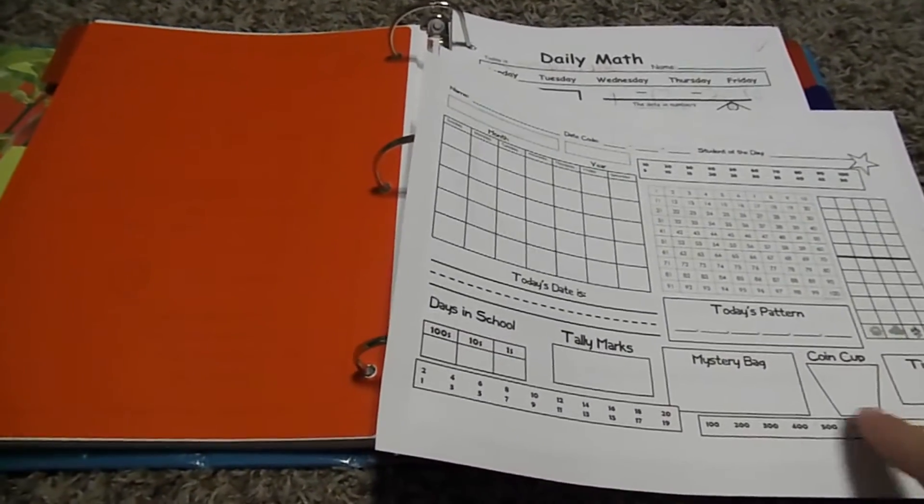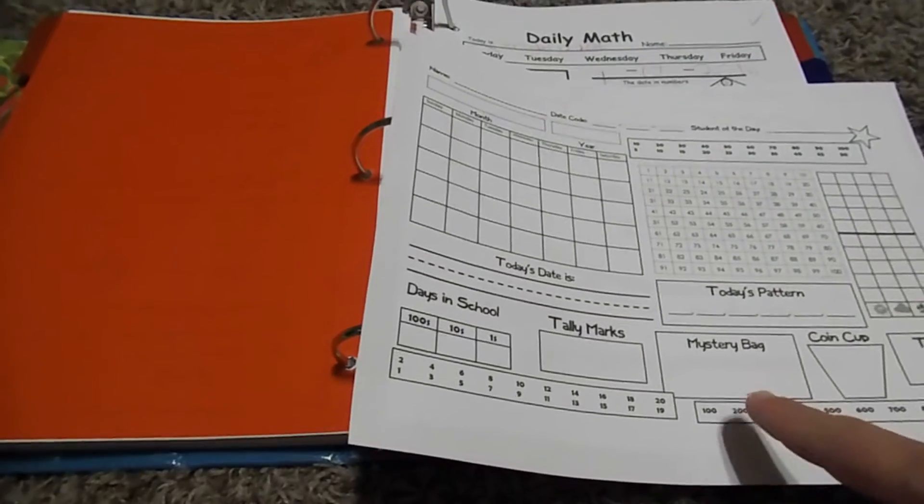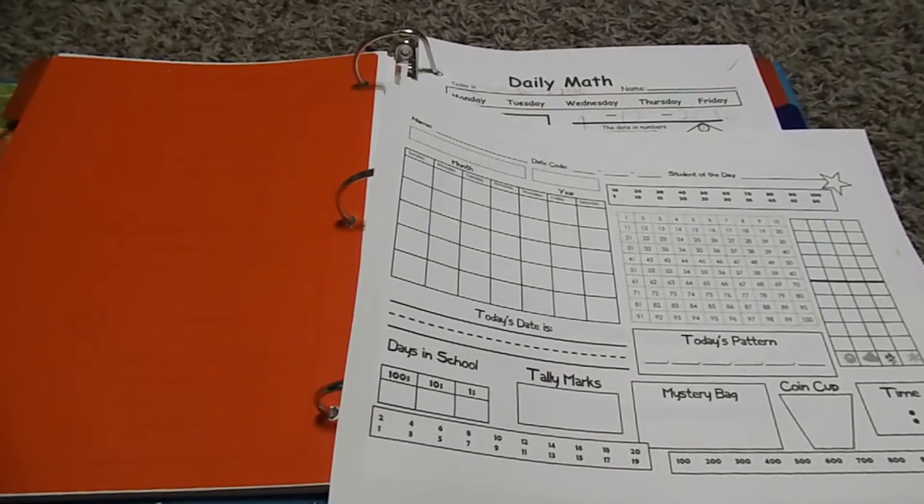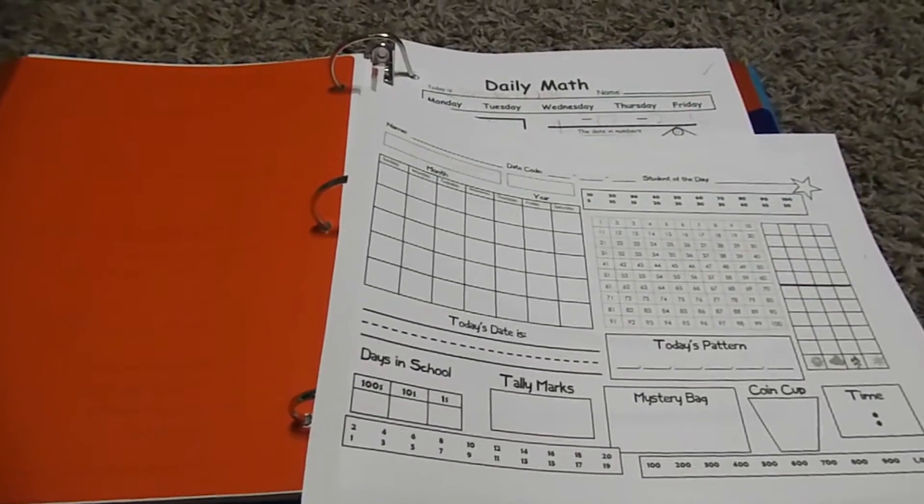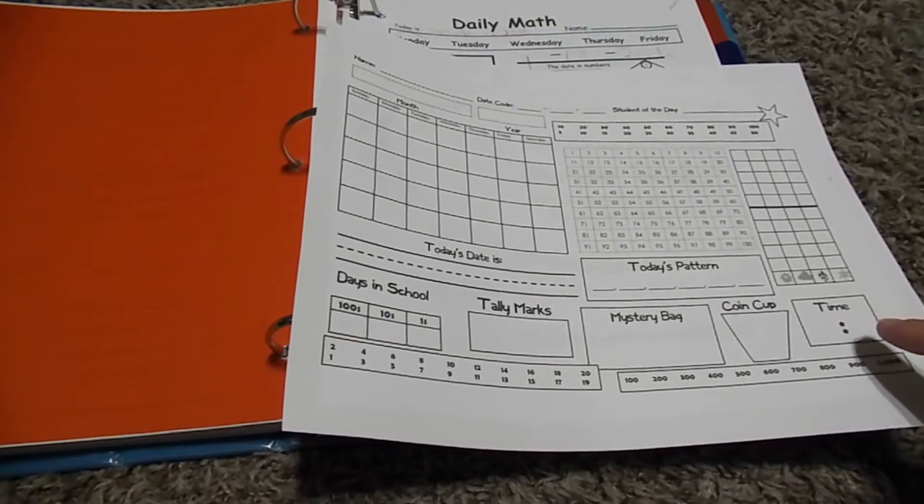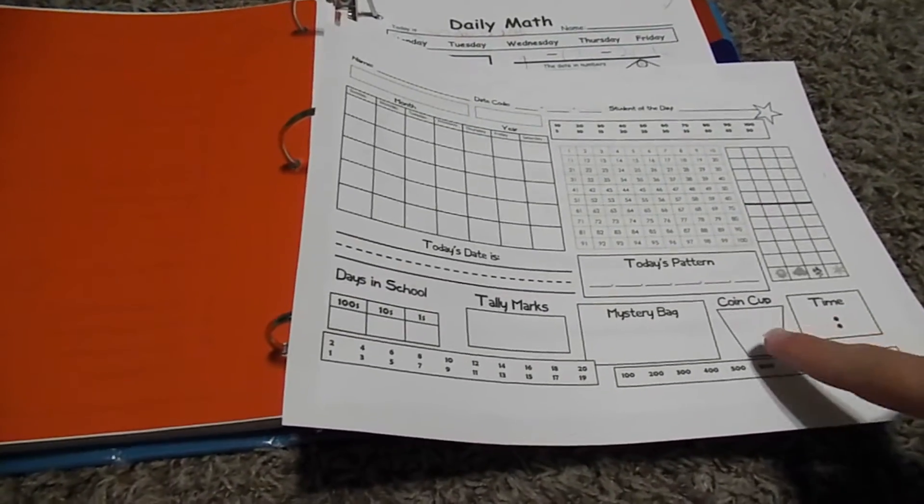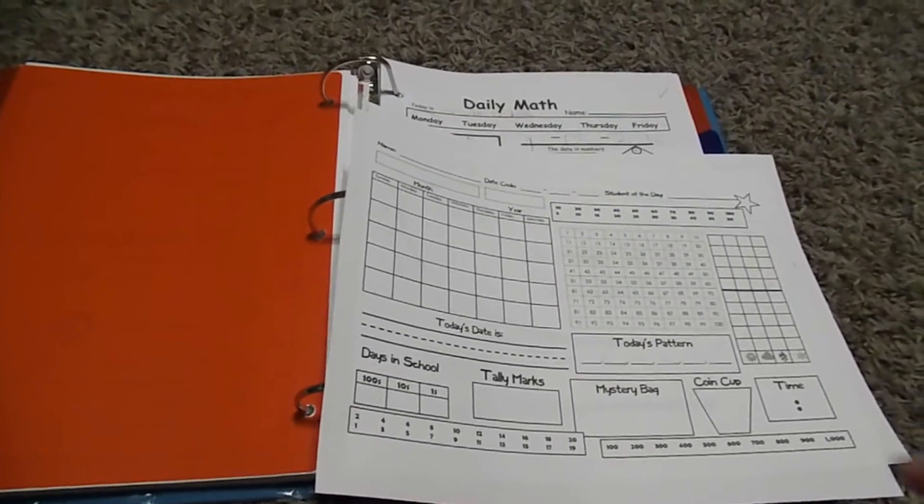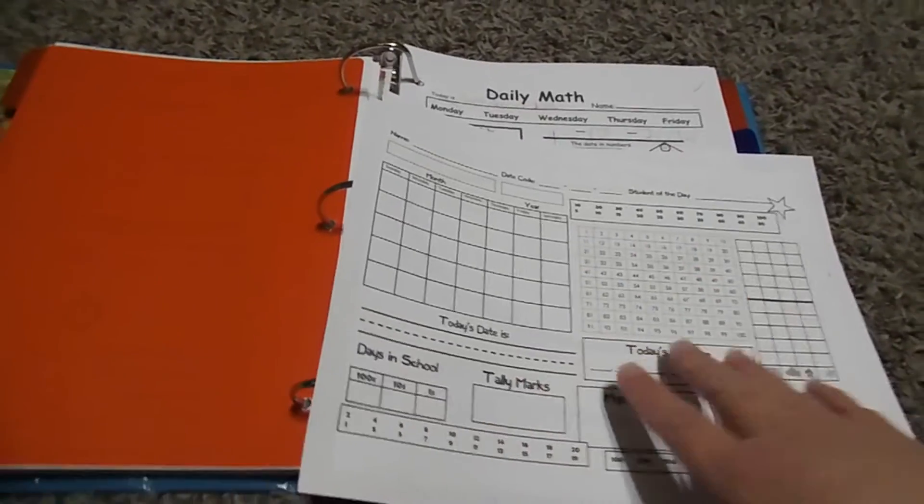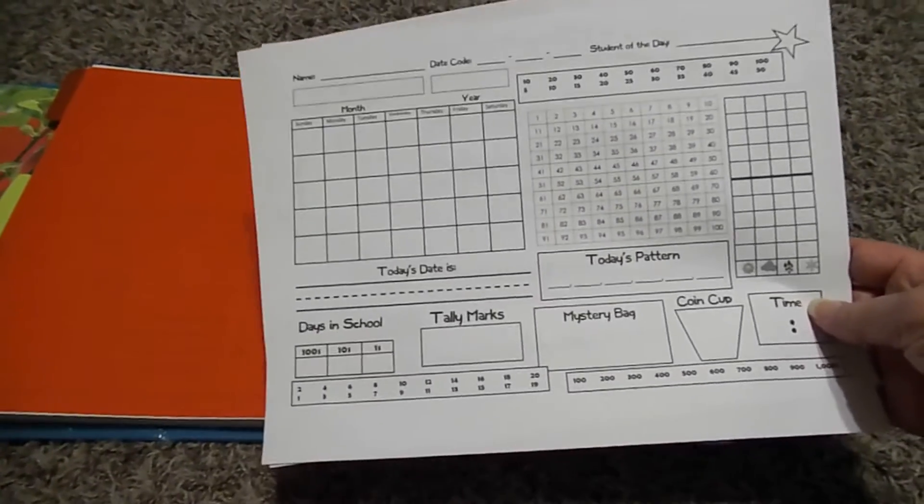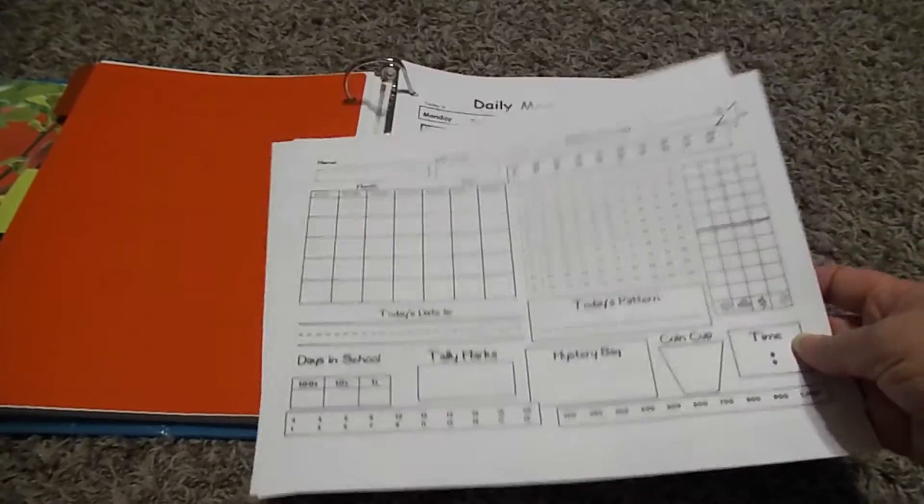I also like the skip counting practice and what I would do for the skip counting. I would just highlight as she did it. And the coin cup and the mystery bag. The mystery bag, I would just choose an activity that we had, different like dominoes or dice or some kind of fun math game and add that in there. And then the time, I had a Judy clock that I would put on a certain time and she'd have to write it. Coin cup, I'd give her a certain number of coins, she'd have to count them. Tally marks, I would tell her and so on. So I really like this product. I thought it was great. So I will definitely include this below.